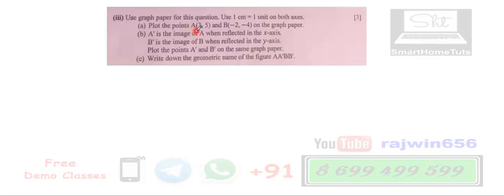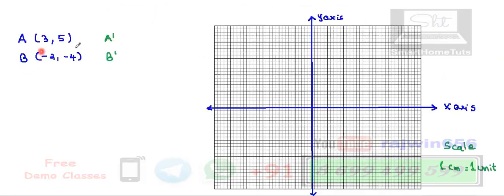So the first thing is I will draw this graph with x-axis and y-axis. The coordinates of points A and B are as stated earlier, and according to this I am drawing and getting the graph set up like this initially.